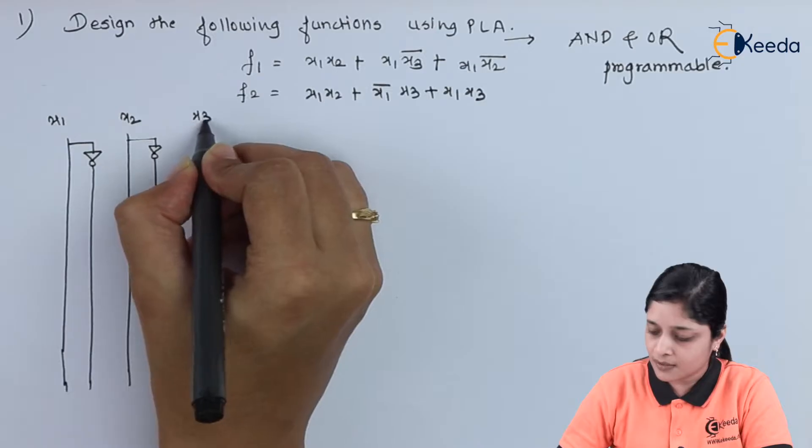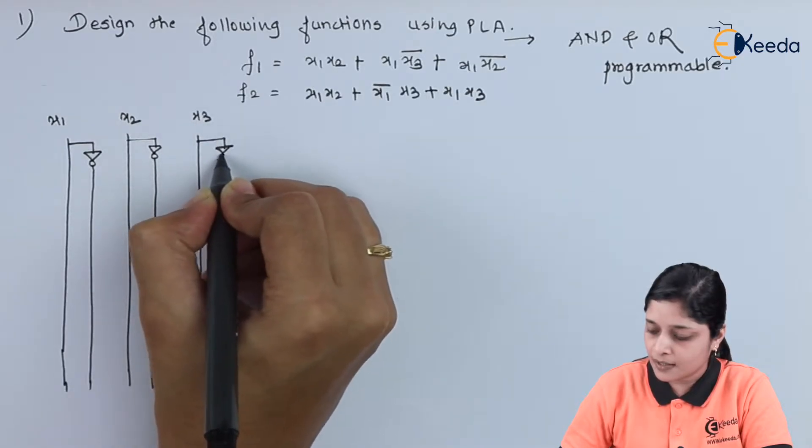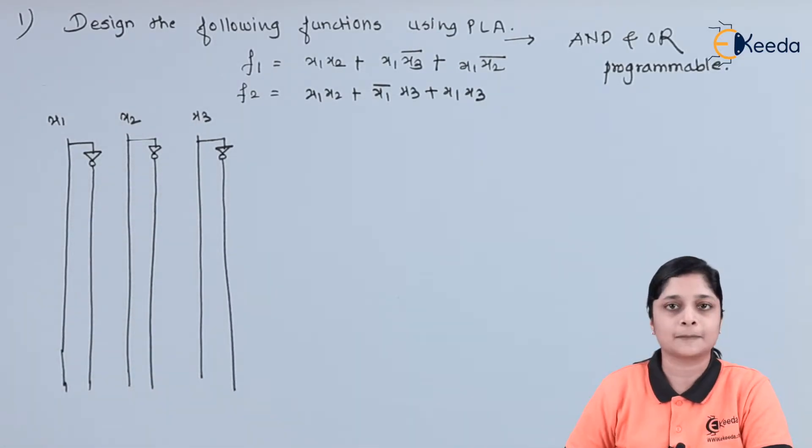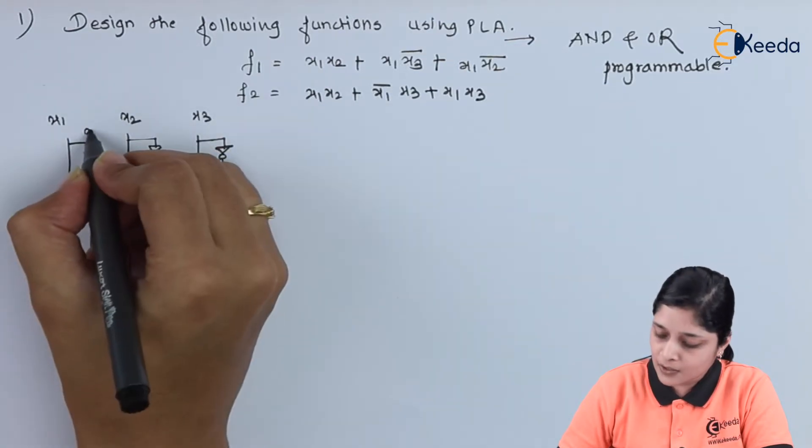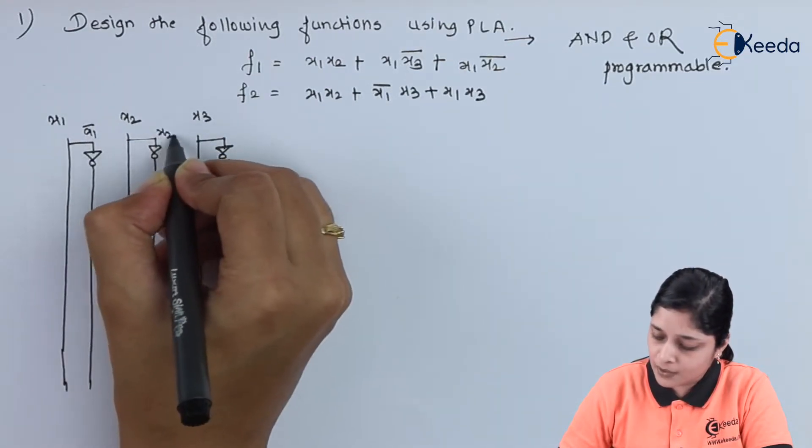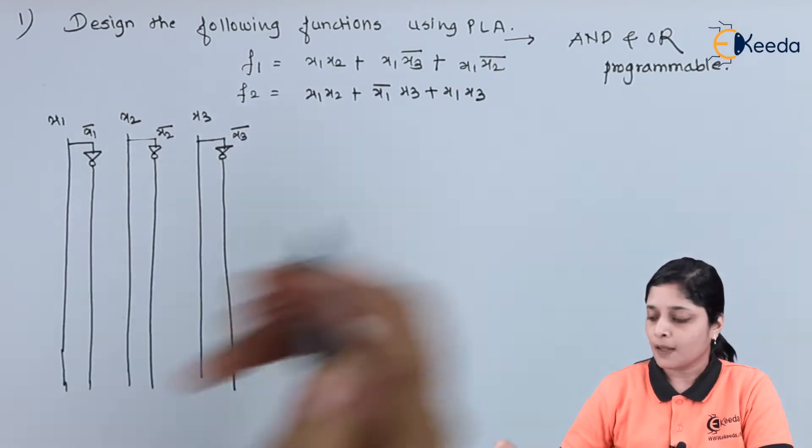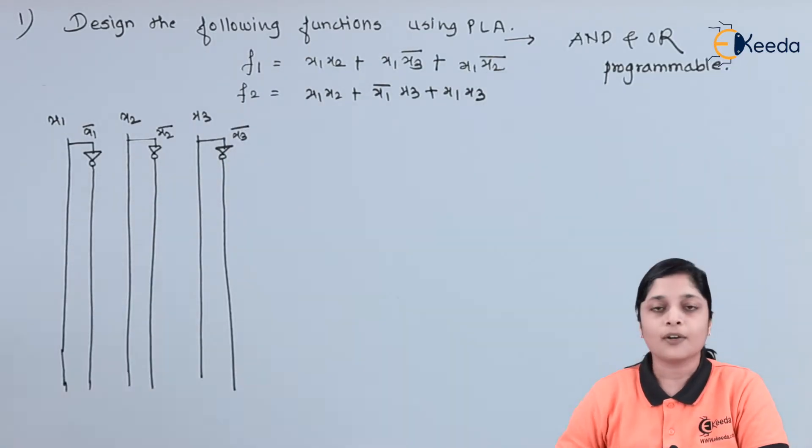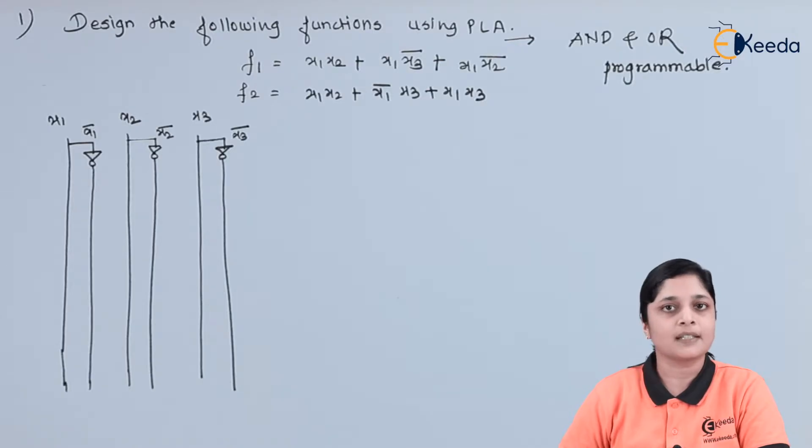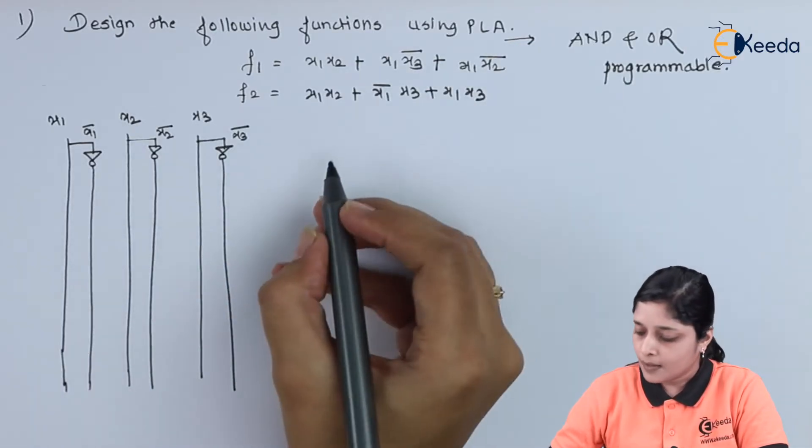Then we have x3 and the complement of this will give you like this. This is your x1 bar, x2 bar, and x3 bar. With the use of AND gate and OR gate, you have to realize the given circuit of PLA.